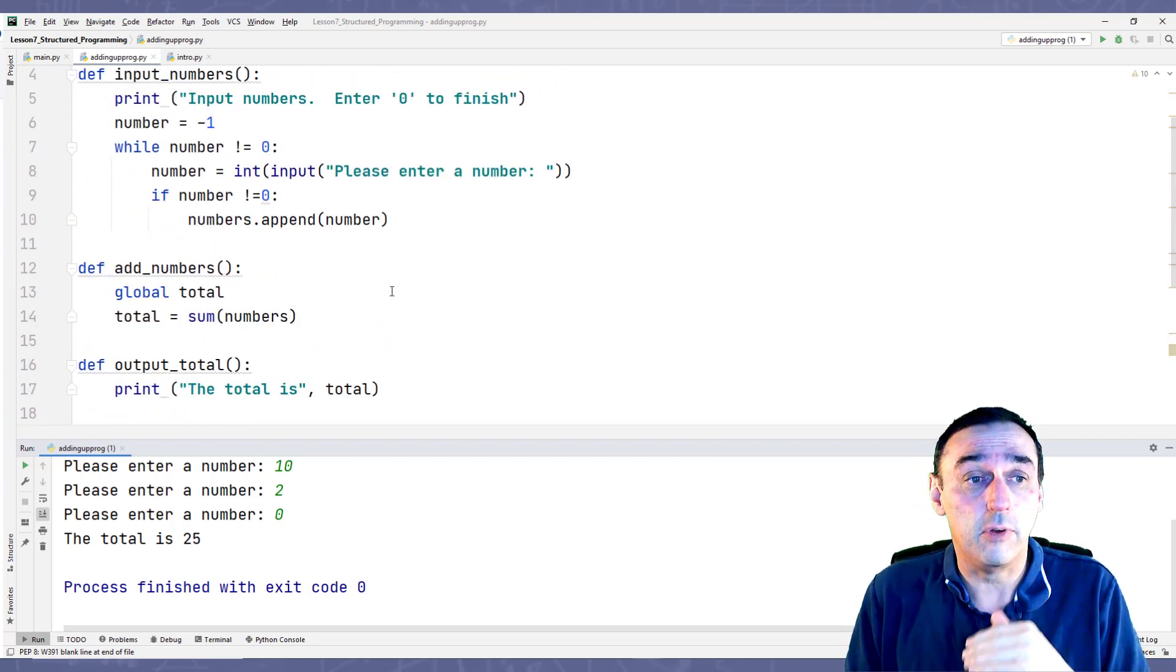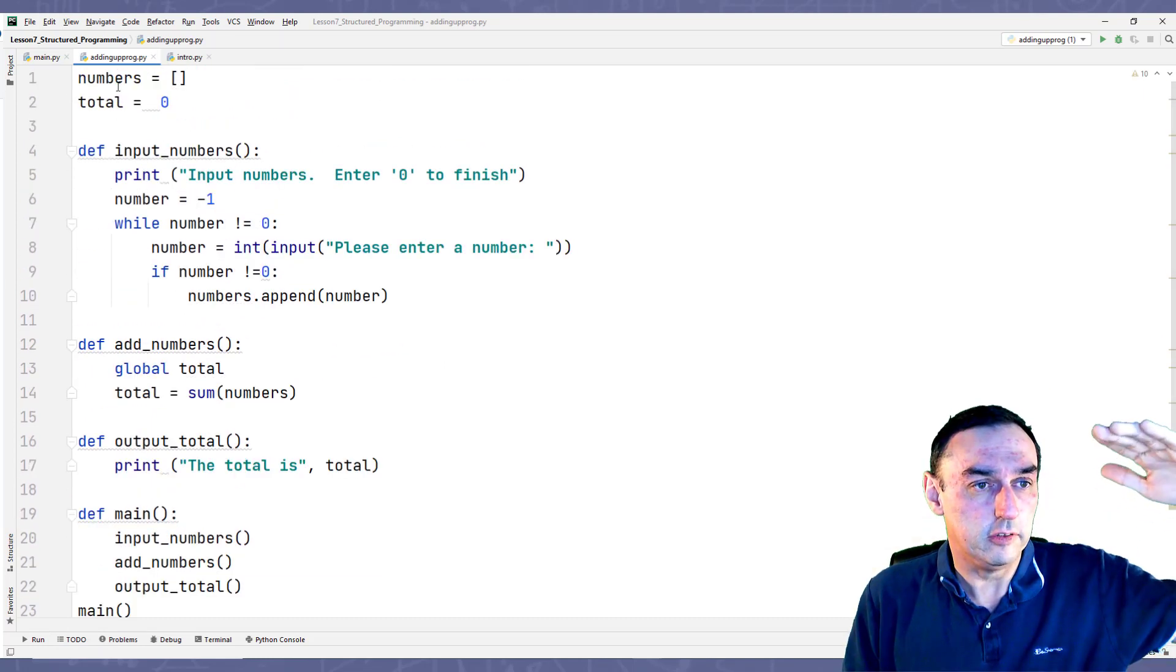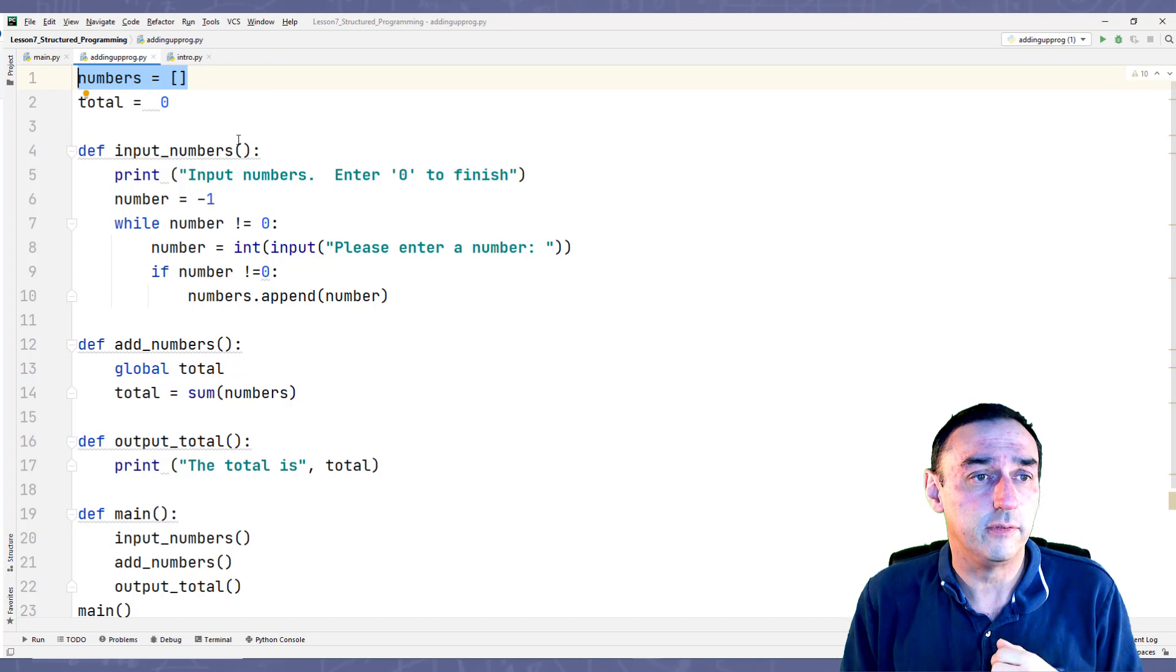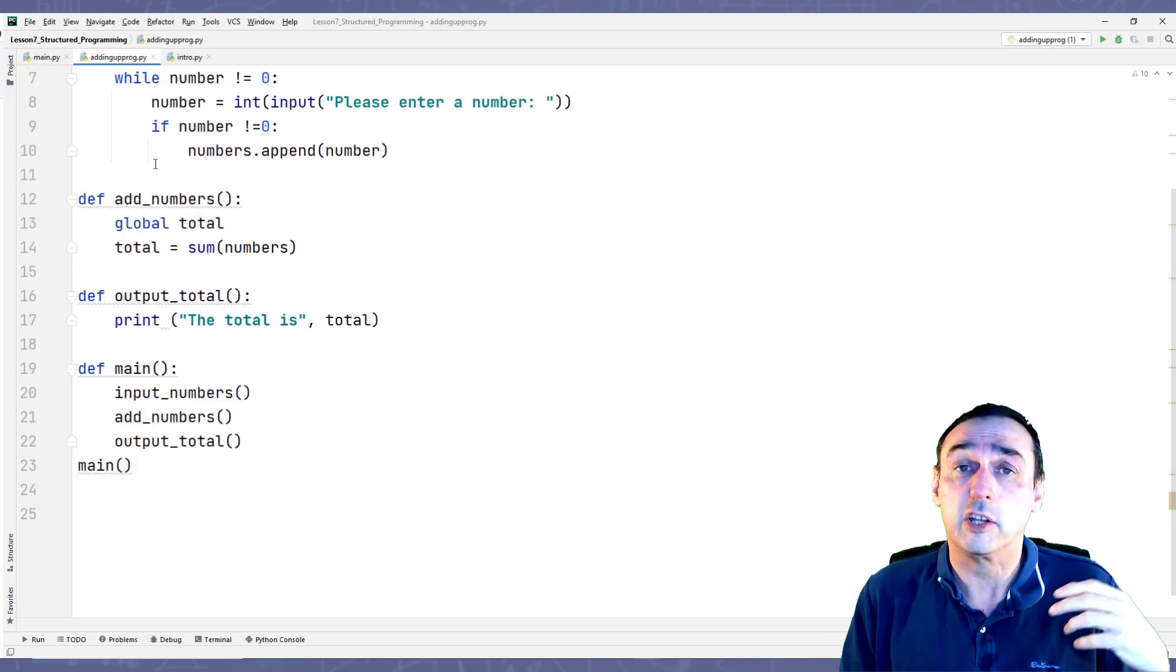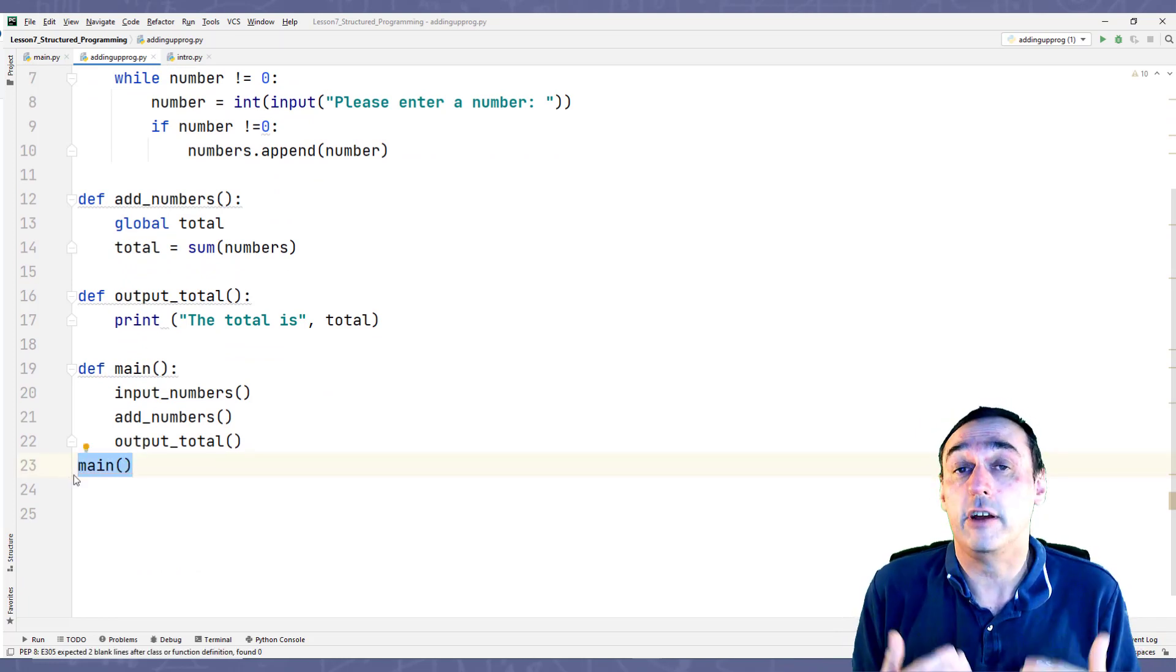And just to step through how the program is working. So we've got here, the program, the Python sets the, defines the list, which is an empty list of numbers, and defines the total. It will not run any of these functions, because they haven't been called yet. So it gets to the end of the program, which is main, which says call that function main.